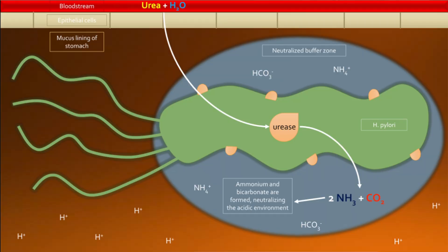As you know, the stomach secretes hydrochloric acid, which helps in digestion of food, especially proteins. This hydrochloric acid keeps a lower pH, which is not a conducive environment for H. pylori to thrive. So what H. pylori does is it secretes an enzyme called urease. This urease enzyme acts on urea taken from the blood, breaking it down into carbon dioxide and ammonia.